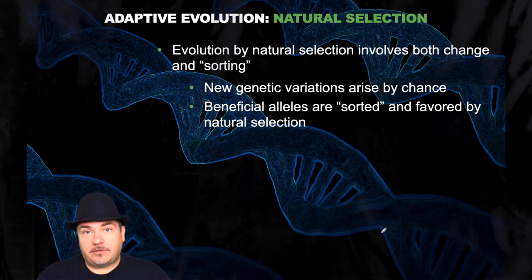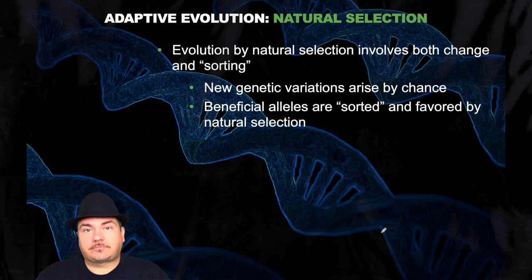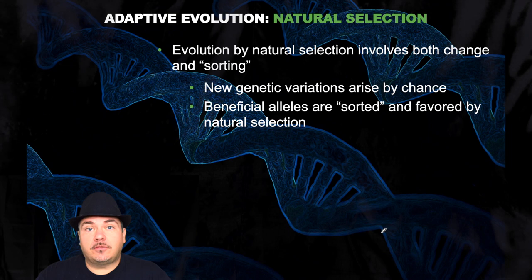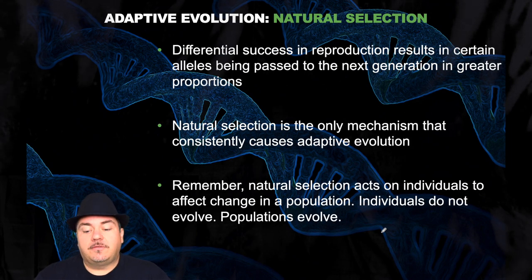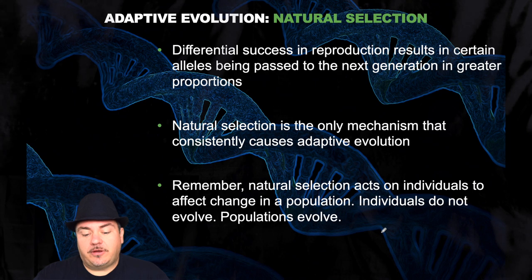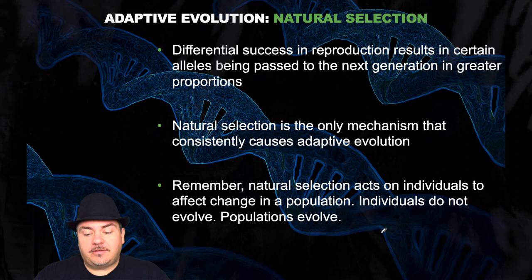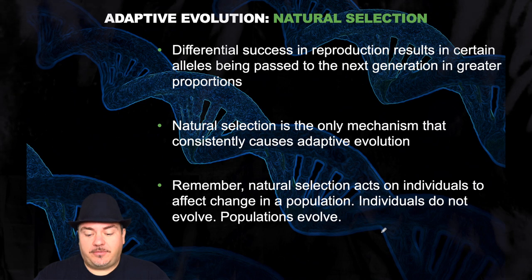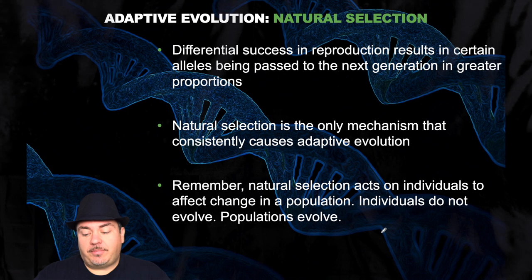Now we're going to get into natural selection, which we've covered in a prior video lecture. Evolution by natural selection involves both change and sorting. New genetic variations arise by chance, and then beneficial alleles are sorted and favored by natural selection. Differential success in reproduction results in certain alleles being passed to the next generation in greater proportions. Of note, natural selection is the only mechanism that consistently causes adaptive evolution — organisms are better suited to their current environment.